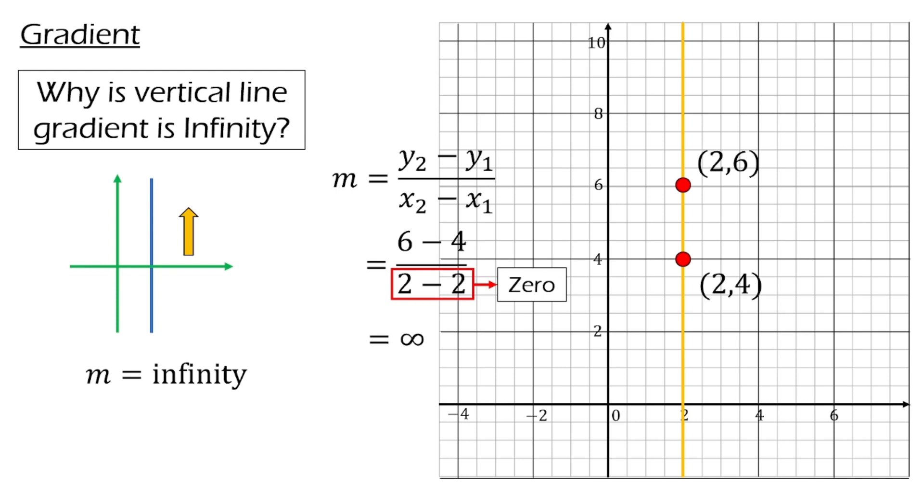As you know, any number divided by 0 is infinity or undefined. This explains why vertical line has gradient equal to infinity.